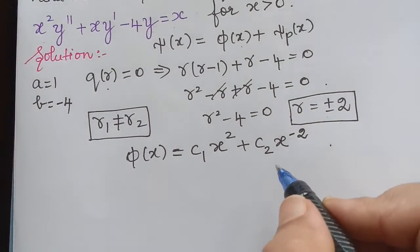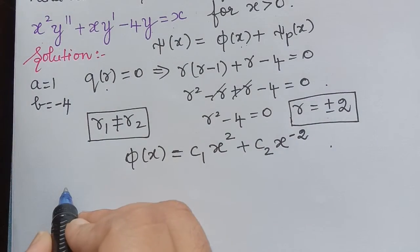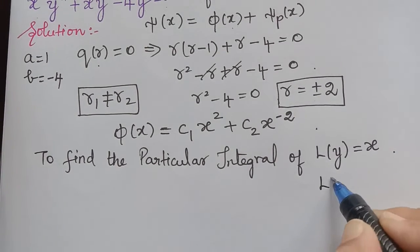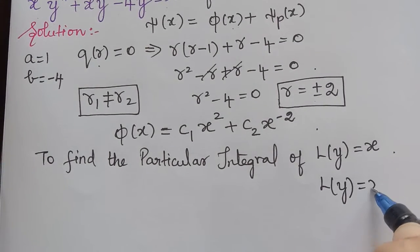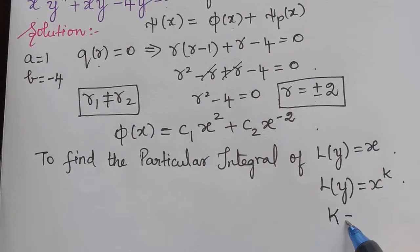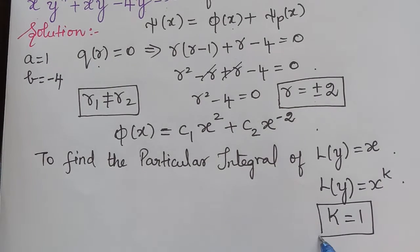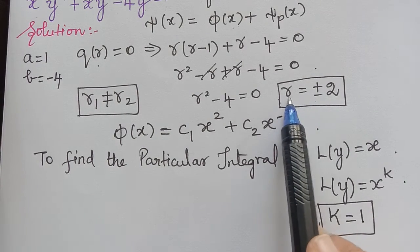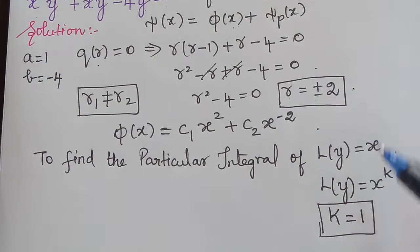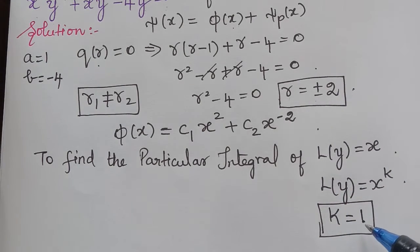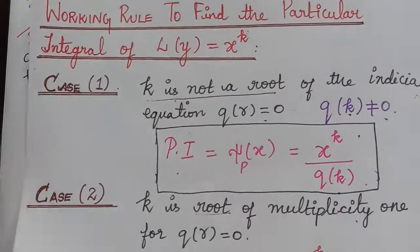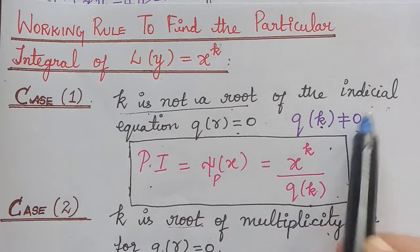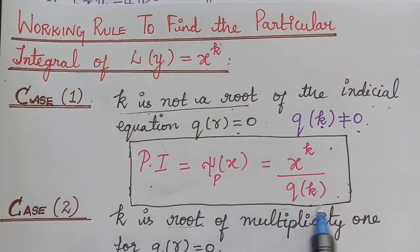Next we find the particular solution for L(y) = x. Comparing with L(y) = x to the power k, we see that k equals 1. We check whether k = 1 is a root of the indicial equation — it is not, since the roots are +2 and -2. So k is not a root, and we use the formula for that case.